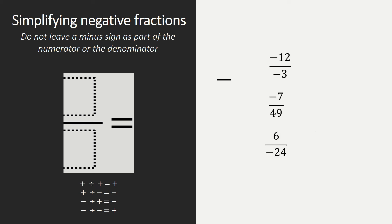We're going to look at three example fractions which we need to simplify. We have minus 12 over minus 3. We already know that negative divided by negative is the same as positive. So minus 12 divided by minus 3 is the same as 4.